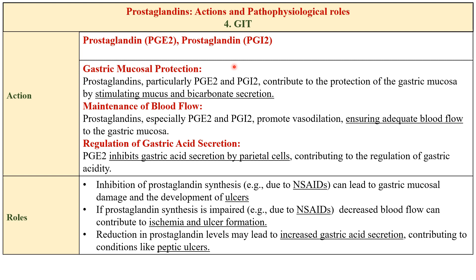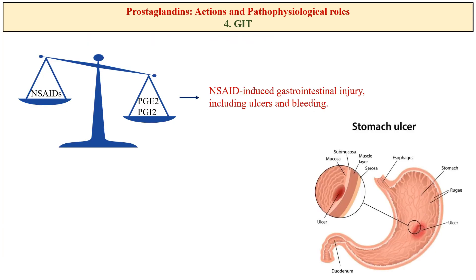When the production of these prostaglandins is inhibited by taking non-steroidal anti-inflammatory drugs like aspirin or ibuprofen, NSAIDs inhibit prostaglandin production and can lead to gastric mucosal damage and development of ulcers due to reduction in mucus and bicarbonate secretion. Blood supply to the gastric mucosa will also be reduced, contributing to ischemia or ulcer formation. Reduction in prostaglandin levels increases gastric acid secretion, contributing to peptic ulcers. Taking NSAIDs for a long time leads to ulcer formation due to inhibition of prostaglandin synthesis.